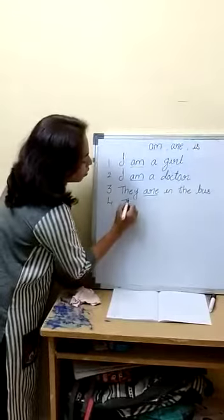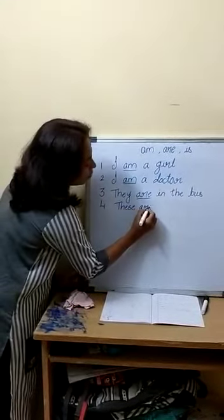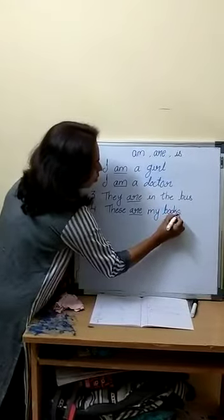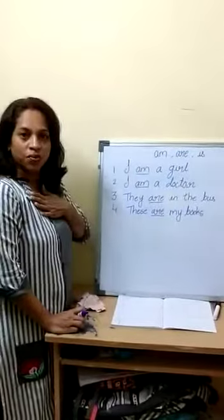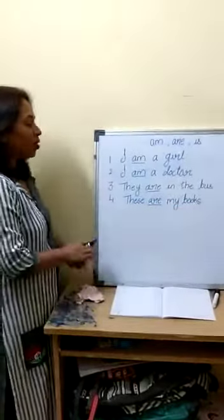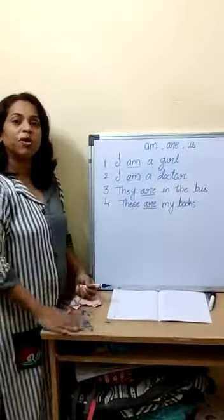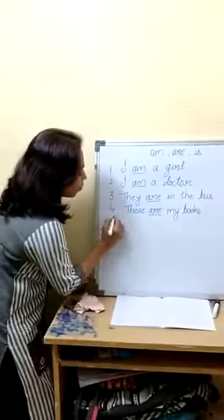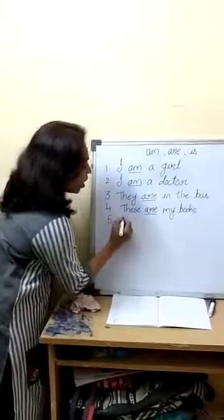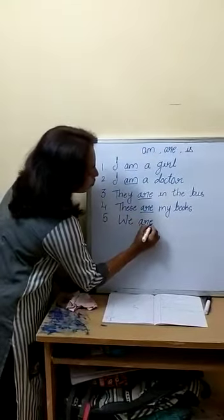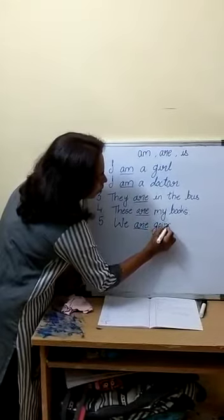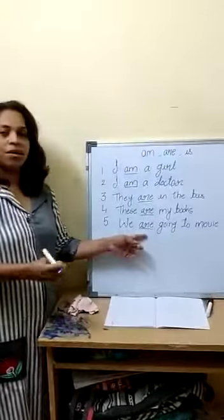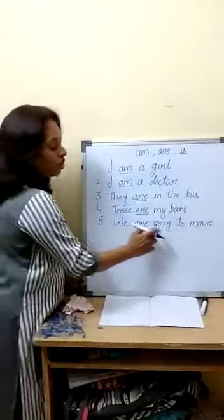These are my books. When we are talking about more than one person or a group, we use 'they are' or 'these are'. And also, if we are talking about our family — We are going to the movie. We all the family members — we are going to movie. That time we use 'we are'.